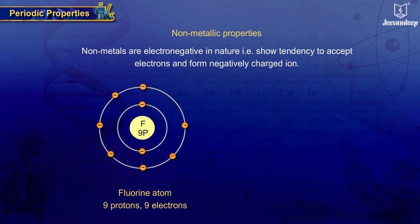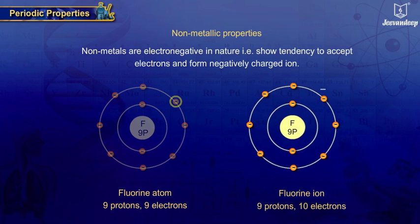Non-metals form negatively charged ions. Fluorine atom accepts one electron into its outermost shell easily, forming fluorine ion with one unit of negative charge.